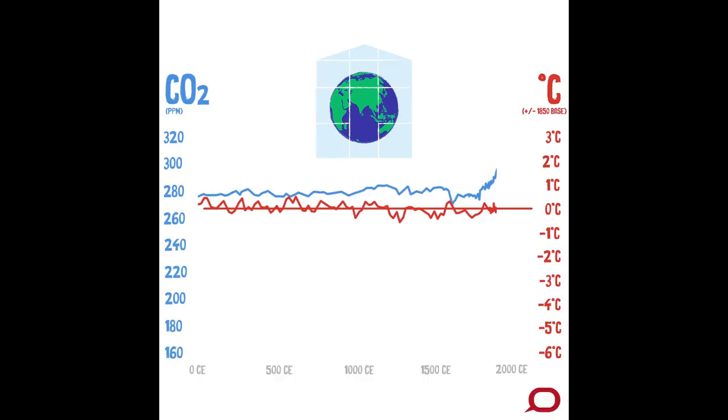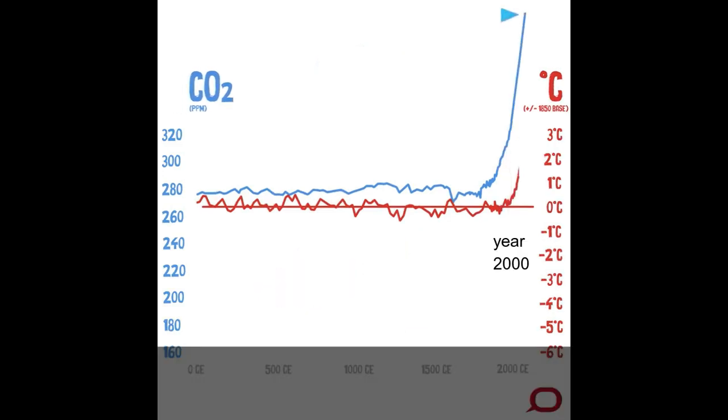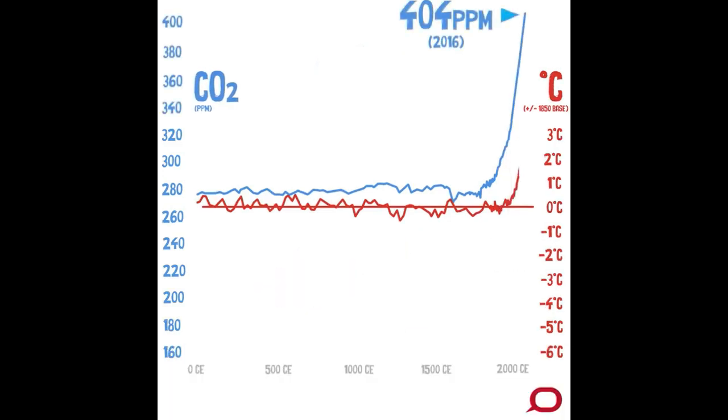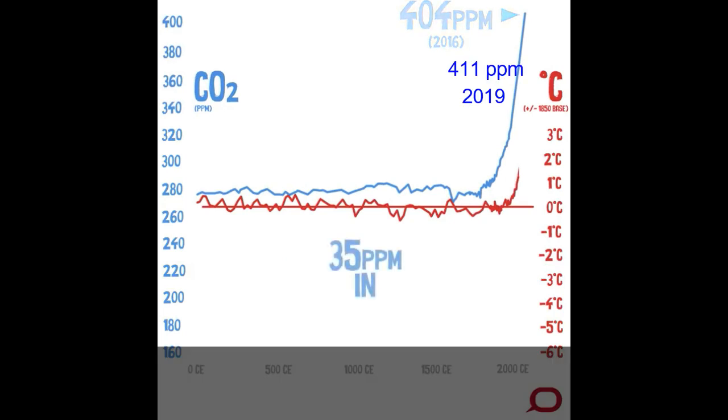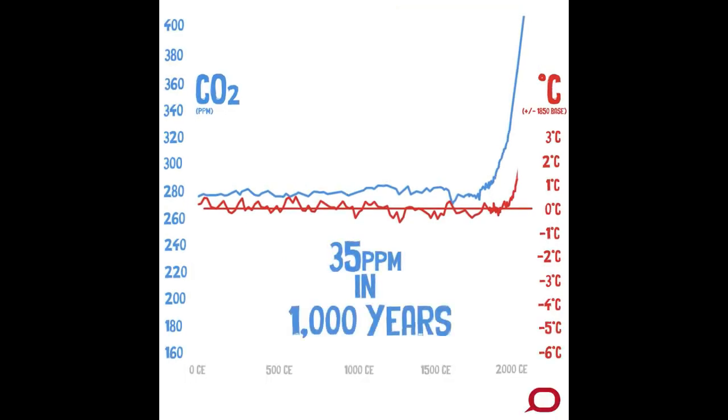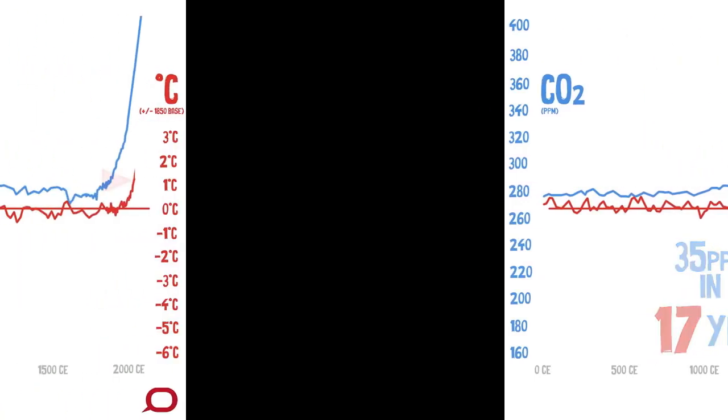It would take until 1938 for scientists to show the Earth was warming and propose that CO2 was the cause. Here's where we are now. When the Earth warmed out of the last ice age, CO2 levels naturally increased by 35 parts per million over 1,000 years. Humans have caused CO2 to rise by this amount in just the last 17 years.